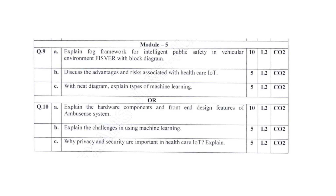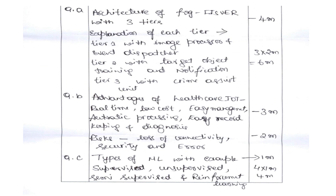In Module 5: determine vehicular environment, advantages and risks associated with healthcare IoT, and explain types of machine learning. Alternative choices include hardware components and front-end design features, challenges in machine learning, and whether privacy and security are important in healthcare IoT. For the scheme: architecture of fog computing — drawing the architecture carries four marks and explaining each component carries six marks. For 9B, advantages of healthcare IoT carries three marks and risks of IoT used in healthcare carries two marks. For 9C, definition of ML carries one mark and listing and explaining types of ML with examples carries four marks.